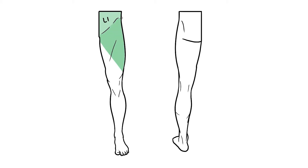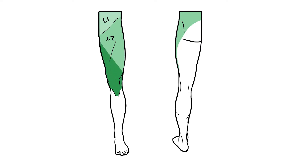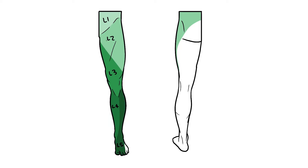L2 will also pass laterally to have a small supply on the posterior aspect. L3 is found over the knee and is separated from L2 by this long diagonal border. L4 supplies skin on the medial leg, whilst L5 supplies the anterolateral leg as well as most of the dorsal foot.